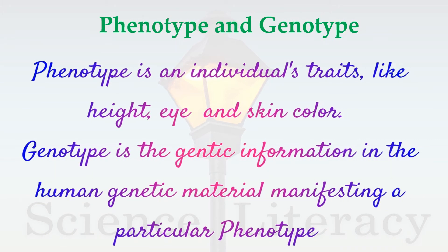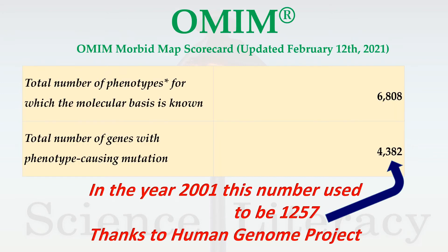You'd like to know more about phenotype and genotype. Genotype is a set of information organized in a specific sequence in the human genetic material, the DNA. Phenotype is how this highly ordered genetic information is manifested in the form of human traits like human height, eye colors, skin colors, and so on. Thanks to researchers across the world, the OMIM database is updated daily and progress has been amazing after the release of the human genome.